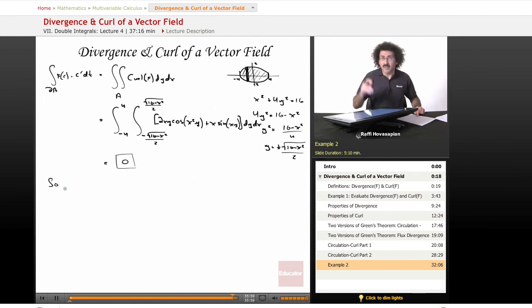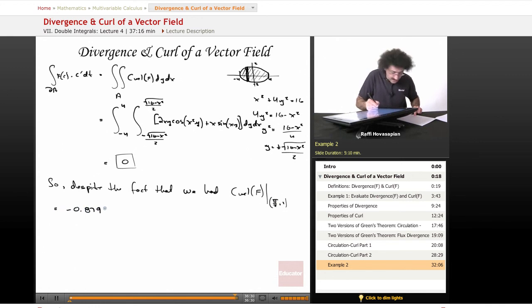So this is what's interesting. Remember, we found the curl at a certain point. The curl was negative. So despite the fact that we had the curl of f evaluated at the point pi over 2, 1 was equal to negative 0.879,